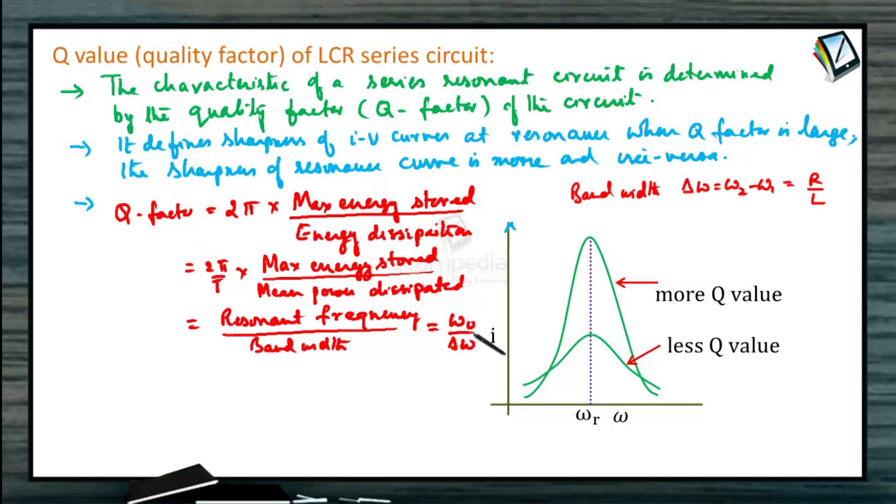So bandwidth Δω is equal to ω₂ minus ω₁. If we take the difference between these two, we are getting it as R by L.